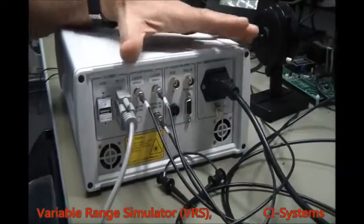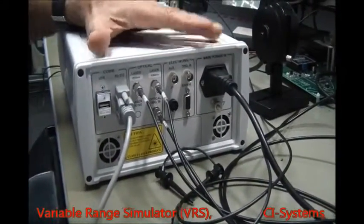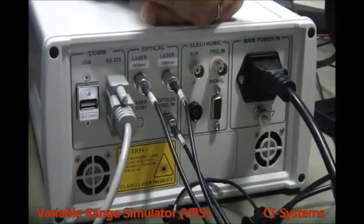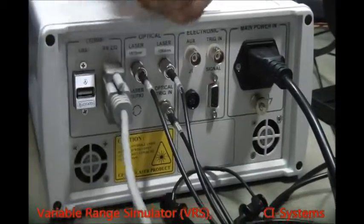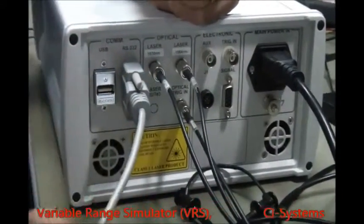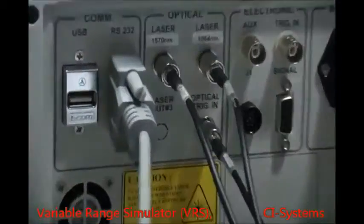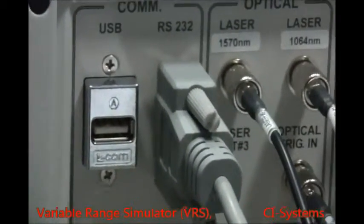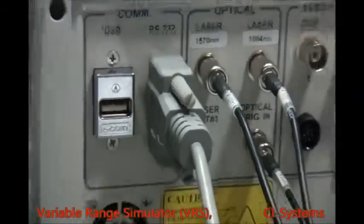Here we see the back side of the VRS. This is where we have the input-output of the unit. This cable is the communications cable and it can be either RS-232 or USB. We use it to remotely control the controller through the Windows software application.